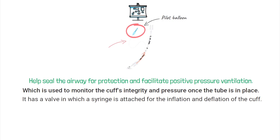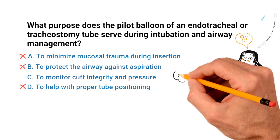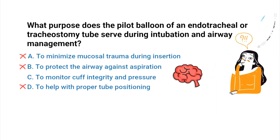This can be done simply by pumping air into the cuff for inflation or removing air to deflate the cuff. You should know that in general the pilot balloon is not meant to help with tube positioning, preventing aspiration, or minimizing trauma. So by using what we know about pilot balloons as well as the process of elimination, we can determine that the correct answer has to be C: to monitor cuff integrity and pressure.